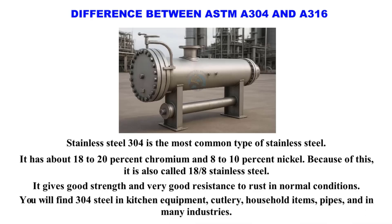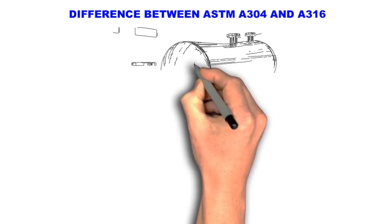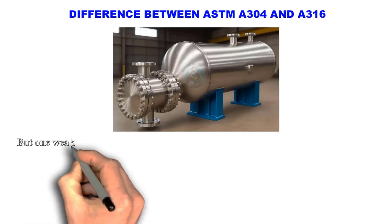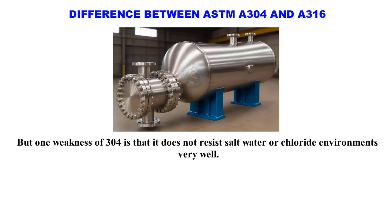You will find 304 steel in kitchen equipment, cutlery, household items, pipes, and in many industries. But one weakness of 304 is that it does not resist salt water or chloride environments very well.